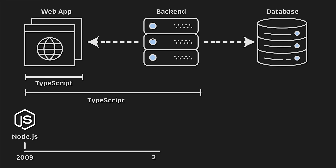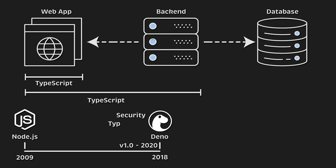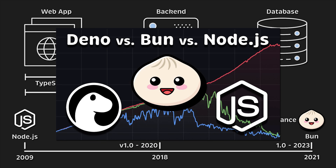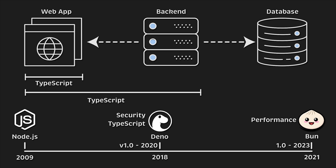Later, in 2018, Deno was announced and brought multiple improvements, such as enhanced security, native support for TypeScript, and more. And more recently, BUN was released in 2021, specifically to boost performance. It's written in Zig, a low-level language that enables precise memory management and high speed. I recently published a benchmark comparing all three runtimes. So now you have a decent performance TypeScript runtime that you can use for your back-end applications.